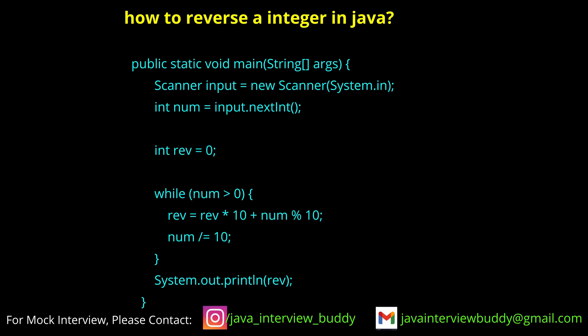For reversing an integer in Java — say 123 needs to become 321 — the logic is: calculate the remainder using integer mod 10, which returns the last digit. For 123 mod 10, it returns 3 first. Then take a reverse variable initialized to zero.